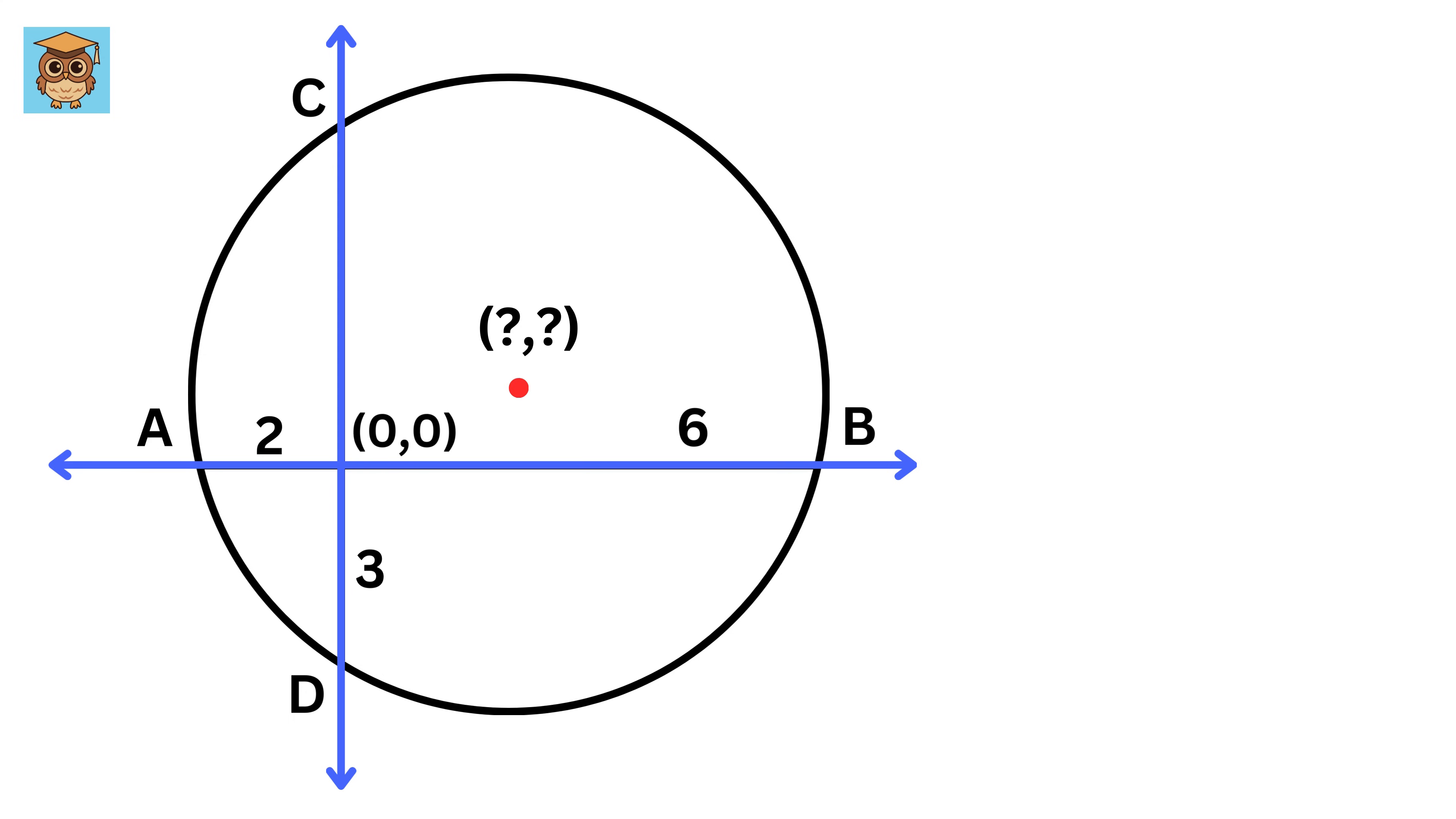We don't know where the center of the circle is yet, so we'll call its coordinates p,q. Now we'll label three points where the lines touch the circle.